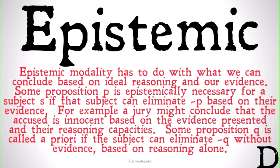Epistemic possibility talks about knowledge. Epistemic modality, or doxastic modality, has to do with what we can conclude based on ideal reasoning and our evidence. Given a set of evidence, what are the possibilities I could logically conclude? What is necessary for me to logically conclude, and what is impossible? Some proposition P is epistemically necessary for a subject S if that subject can eliminate not-P based on their evidence. For example, a jury might conclude that the accused is innocent based on evidence and reasoning. Some proposition Q is called a priori if the subject can eliminate not-Q without evidence, based on reasoning alone. As a skeptic, I'm worried about some of the concerns here, but we're not going to get into them now.